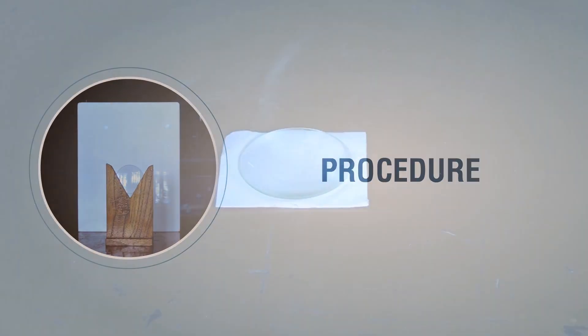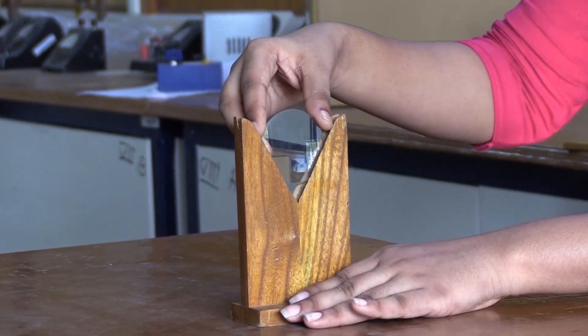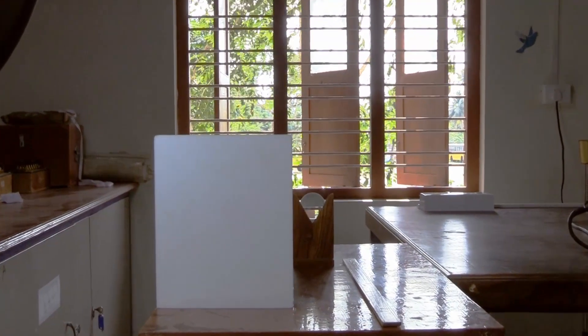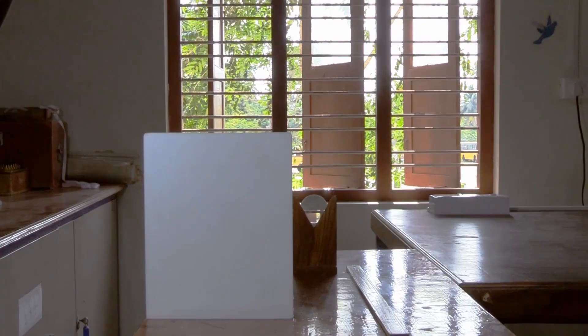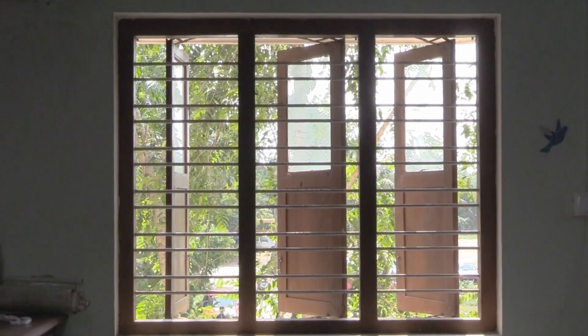Procedure: Take a thin convex lens. Place the convex lens vertically on a lens holder kept on a table. The lens should face a distant object outside the window - a tree or an electricity pole or a distant building.